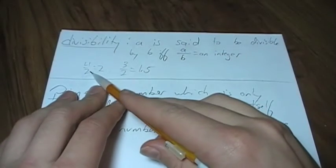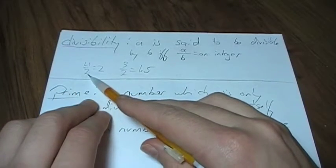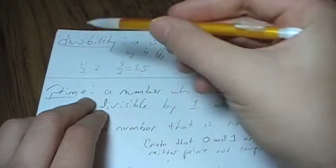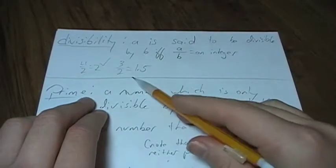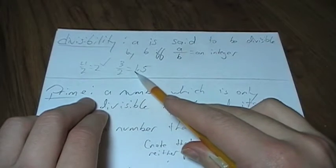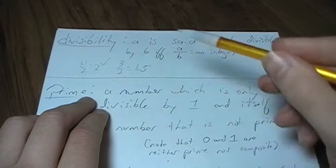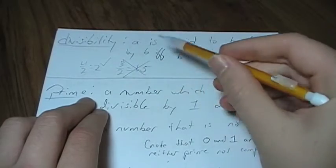For example, 4 is divisible by 2 because 4 divided by 2 is an integer, 2. That's divisible. 3 is not divisible by 2 because the result is a fraction, not an integer. So 3 is not divisible.